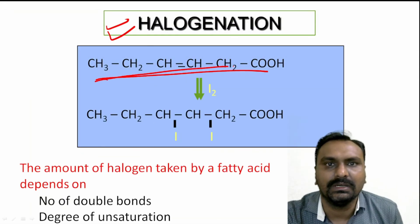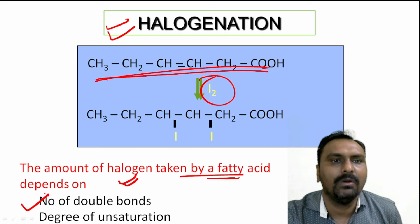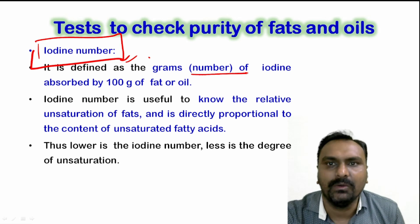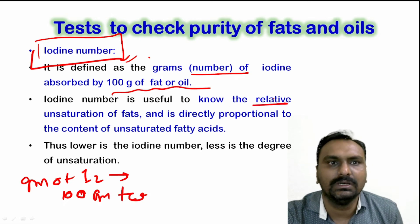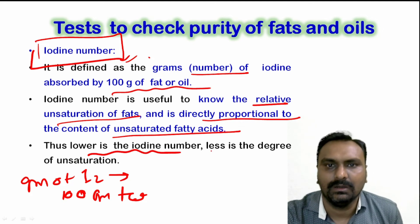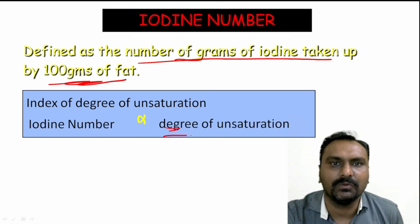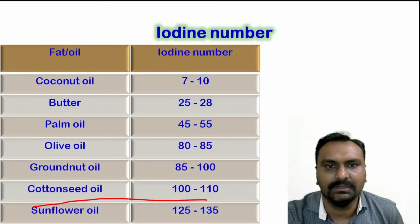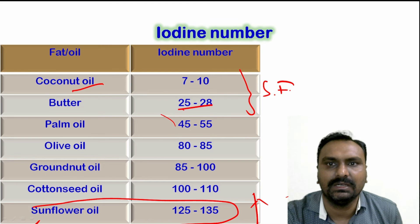Another property is halogenation. Unsaturated fatty acids will take up iodine. The amount of halogen taken up by the fatty acid depends on the double bond and degree of unsaturation. There is a terminology called iodine number, defined as the number of grams of iodine taken up by 100 grams of fat. It is useful to know the relative unsaturation of fat and is directly proportional to the content of unsaturated fatty acids. Lower the iodine number, lower will be the unsaturation. It is used to detect the degree of unsaturation and to detect adulteration. Sunflower oil, being unsaturated, has a higher iodine number compared to butter and coconut oil, which have more saturated fatty acids.